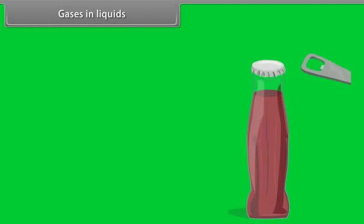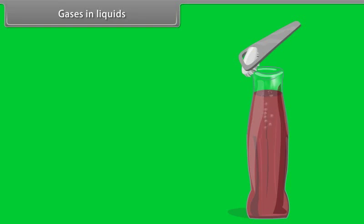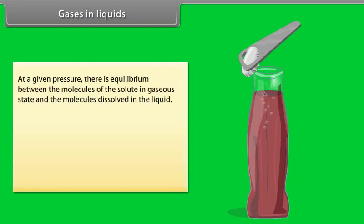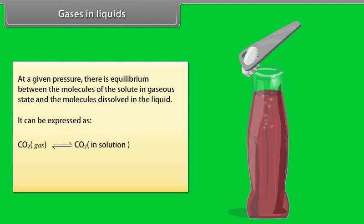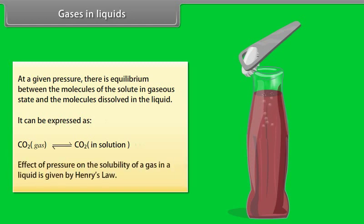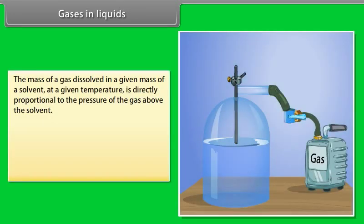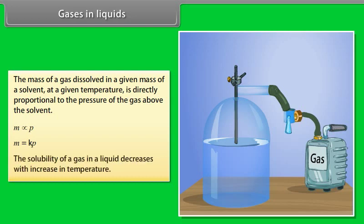Gases in Liquids: When a cold drink is opened, the carbon dioxide dissolved in it fizzes out rapidly — this represents an equilibrium situation. At a given pressure, there is equilibrium between the molecules of the solute in gaseous state and the molecules dissolved in the liquid. The effect of pressure on the solubility of a gas in a liquid is given by Henry's law, which states that the mass of a gas dissolved in a given mass of a solvent at a given temperature is directly proportional to the pressure of the gas above the solvent: M = KP. The solubility of gas in a liquid decreases with increase in temperature.